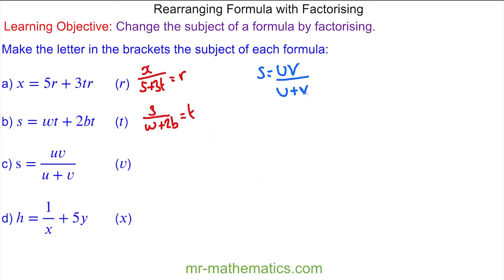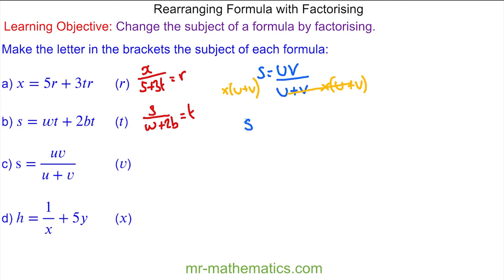For question c we're going to make v the subject. To do this we need to move the denominator of u plus v, and because it is a division of u plus v we're going to multiply both sides by u plus v. These will cancel so we have s lots of u plus v is equal to uv.